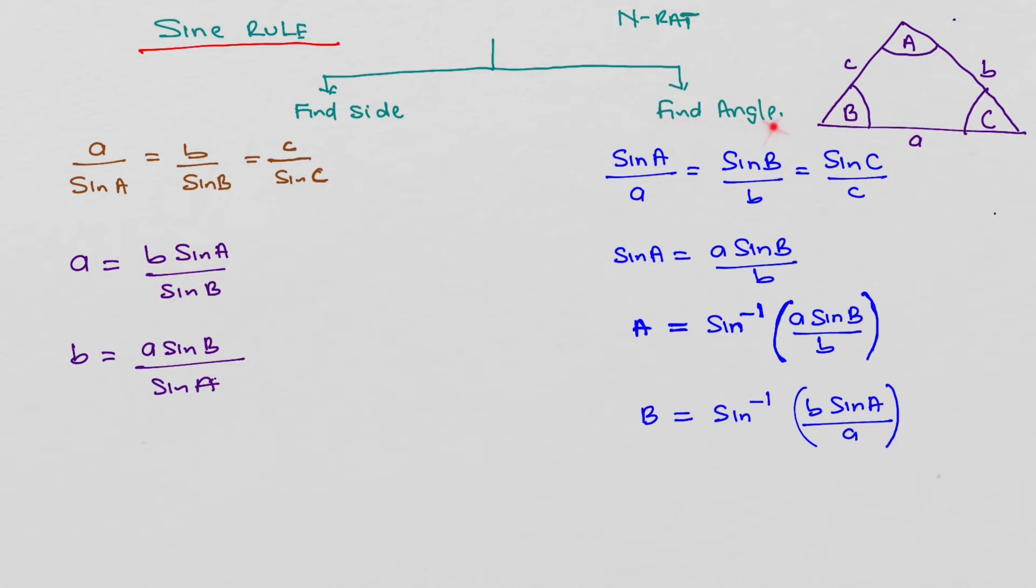If you want to find the angle, you write the sine of the angle on top and the side below. So if we're looking for sine A, we leave the sine of A there and we take little a and put it over there.